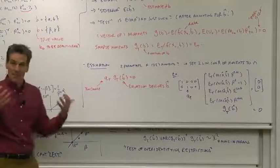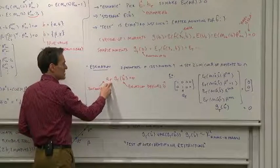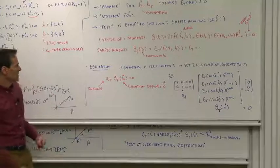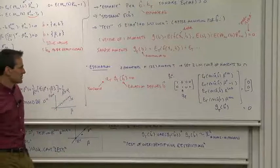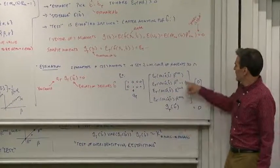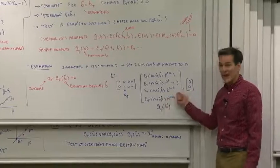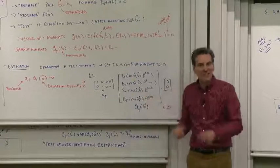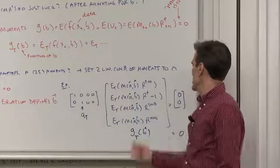So now let's do a GMM estimate. The GMM estimation says choose a linear combination of the sample moments and set those to zero. We want to set the moments close to zero somehow. Why not just take a linear combination of those and set them to zero and use that in order to estimate our parameters?